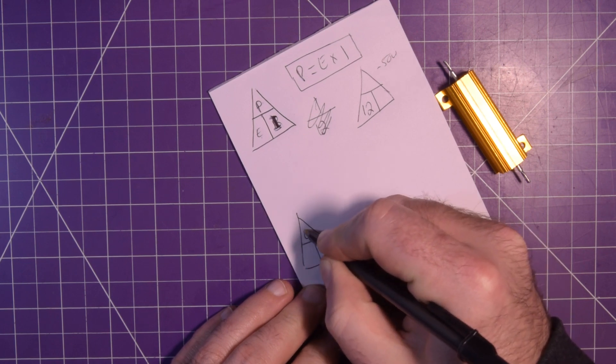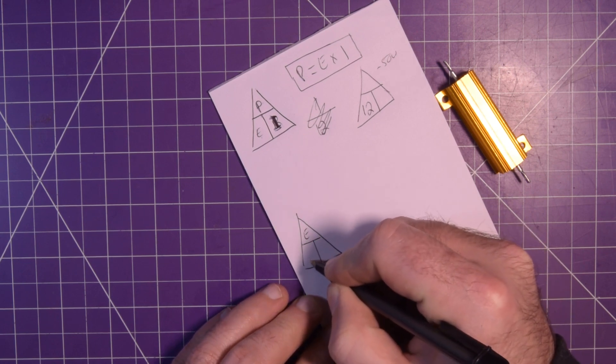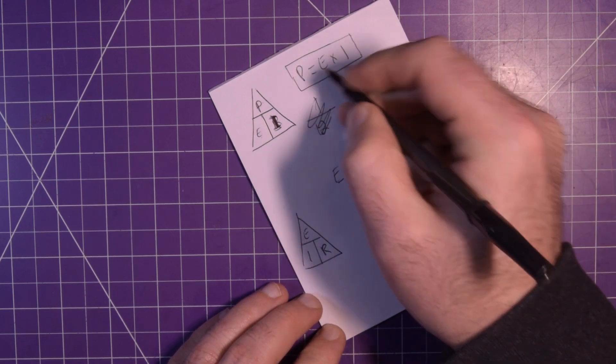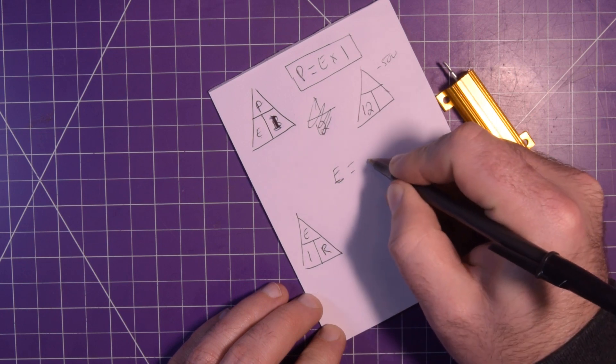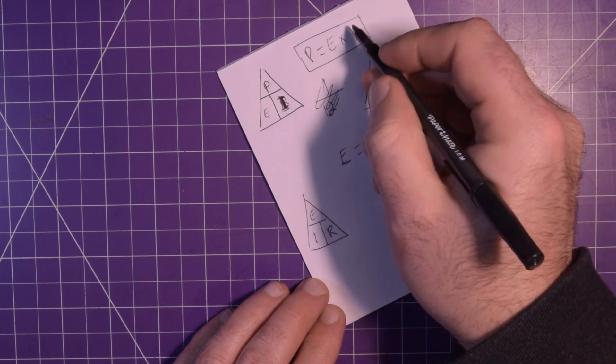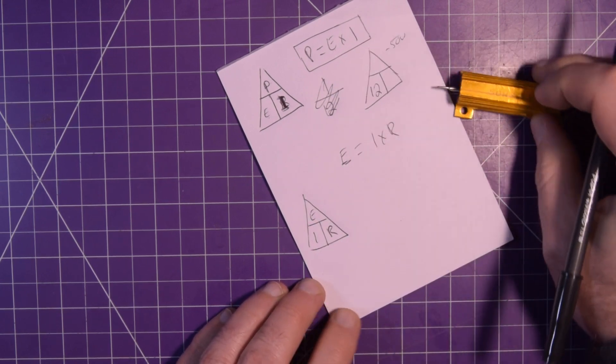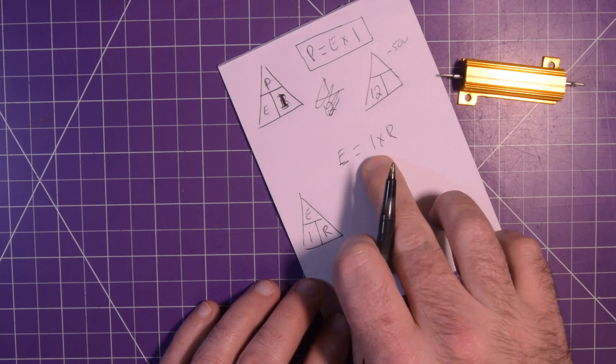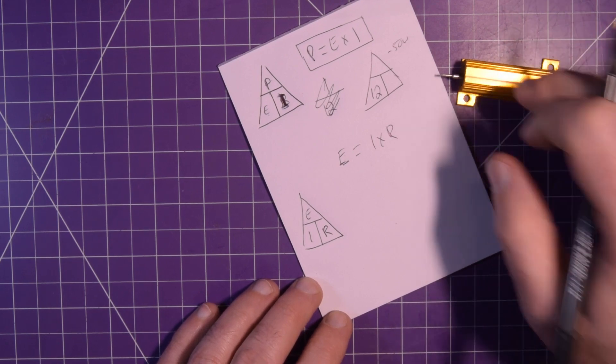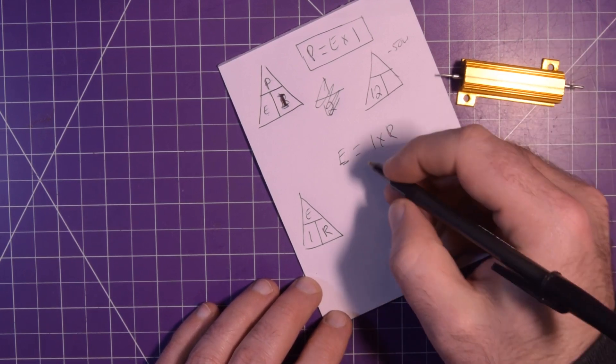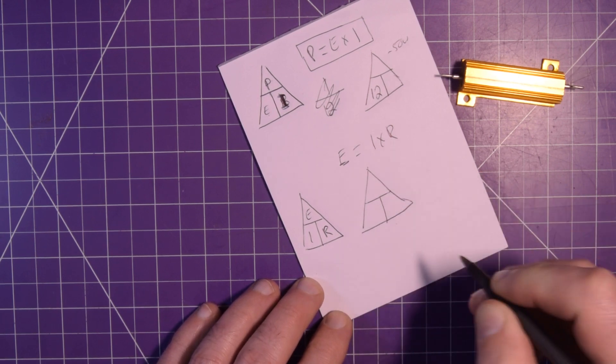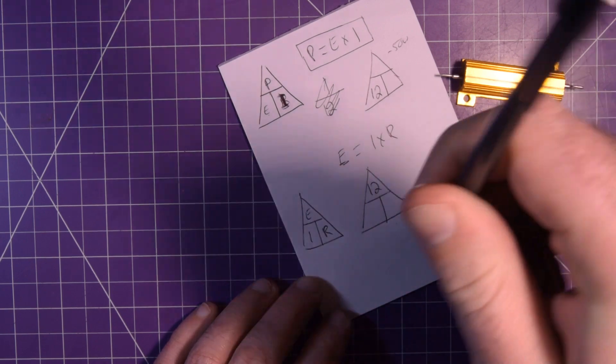We need to know the I, but we don't have the current. All we have is the resistance, but we can figure out the current because Watt's law is intertwined with Ohm's law. So in Ohm's law it's E = I × R. So basically E, which is electromotive force, same thing as this E, equals I times R. So that's the current, and R is the resistance. So we have the resistance and the voltage, so we can find the I. Using that I, we can plug it into here to see how much wattage we're going to draw.